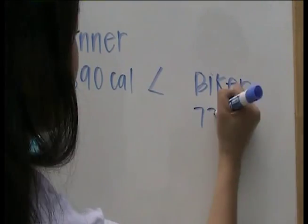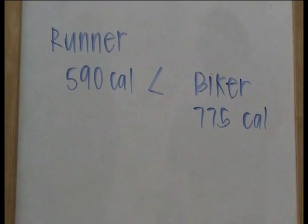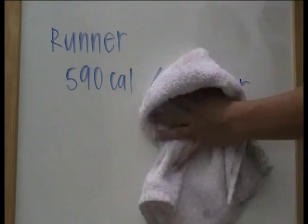The biker burned less calories per mile but covered many more miles than the runner, and ended up burning almost 200 more calories than the runner.